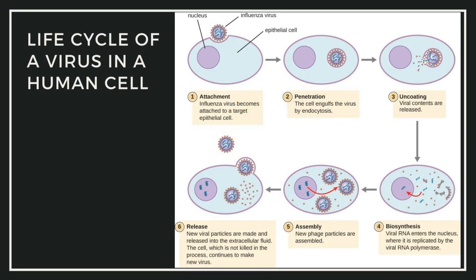Let us try to understand the life cycle of a virus in a human cell. As shown in this diagram in cell number one, the virus is waiting to penetrate the cell, and after penetration it releases its contents into the cell. The viral RNA enters the nucleus where it is replicated by the viral RNA polymerase. After assembly, new viral particles are made and released into the extracellular fluid. The cell, which is not killed in the process, continues to make new viruses.